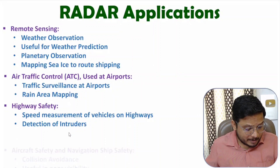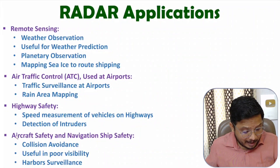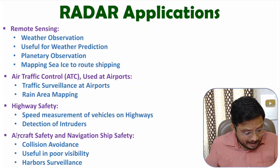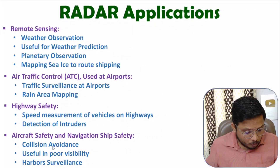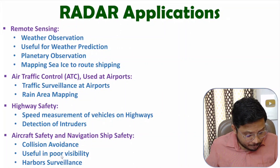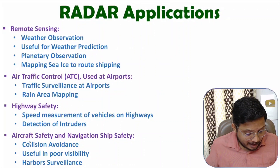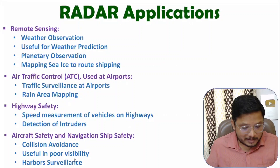The next application is aircraft safety and navigation ship safety. Collision avoidance can be done with the use of radar. Usually in poor weather conditions, visibility will be very poor, and at that time we use radars for aircraft safety as well as navigation ship safety. In harbor surveillance also, we have these applications.